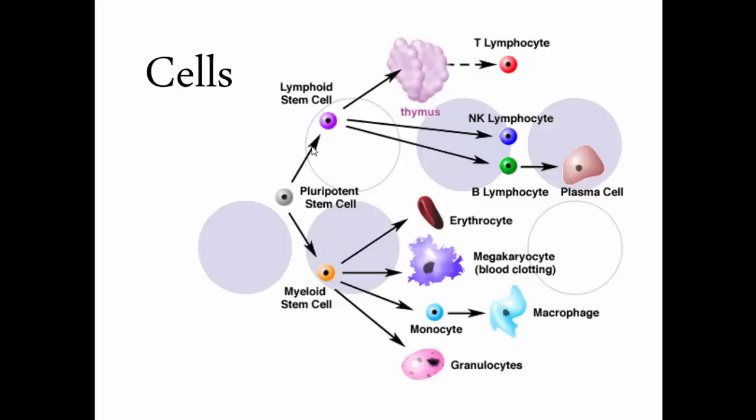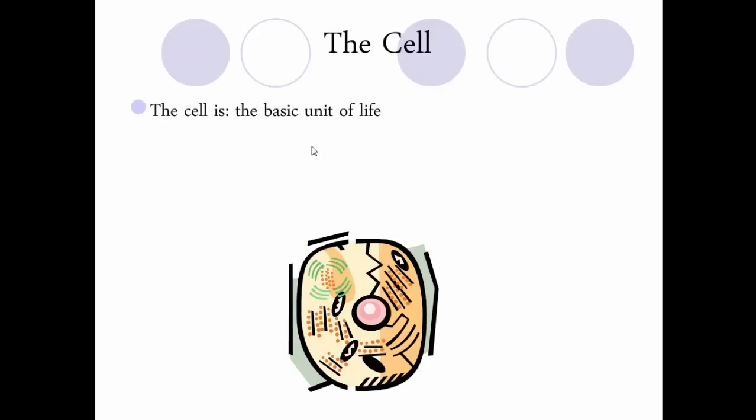Undifferentiated is a fancy way to say not specialized — it doesn't have a particular job until it becomes a particular cell. The cell is the basic unit of life, the smallest thing that can survive on its own as its own living entity. There are organisms made of a single cell, such as bacteria — a simple unit capable of independent existence.